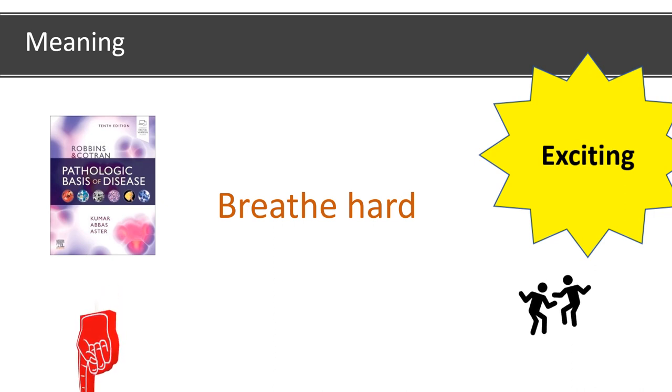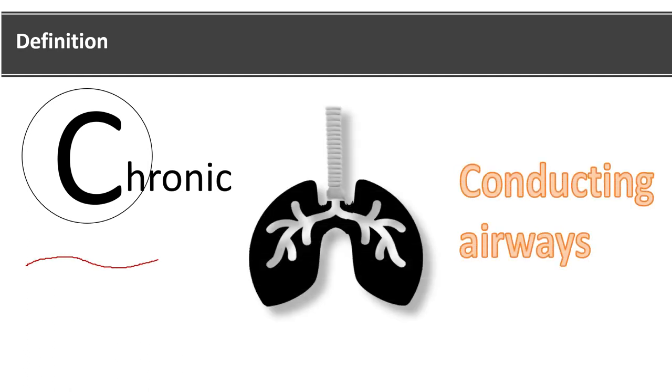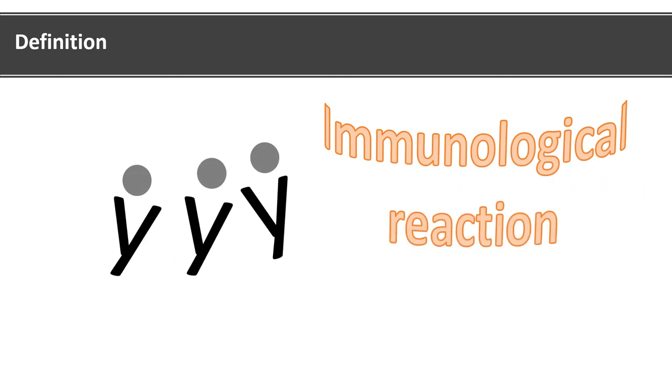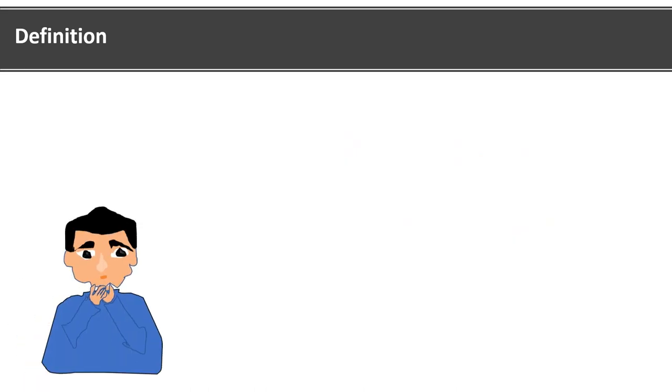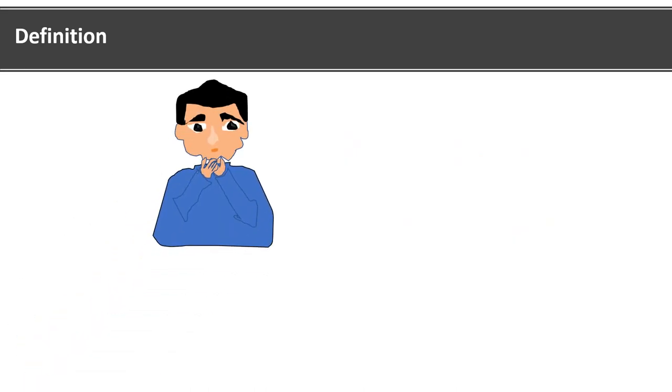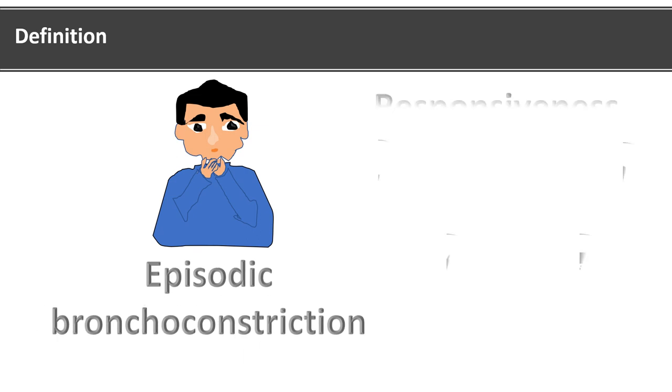Starting with the definition, if you understand this definition you will understand the etiology, pathogenesis, signs and symptoms of asthma. Asthma is a chronic disease of conducting airways, meaning present for a long duration in the airways till the terminal bronchioles. The second part of the definition is it is caused by an immunological reaction. The third part says that asthma presents as episodic bronchoconstriction which is due to increased airway sensitivity to various stimuli, inflammation of bronchial walls, and increase in mucus secretions.